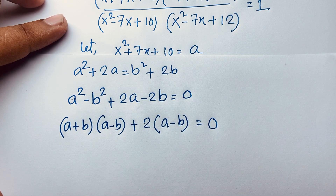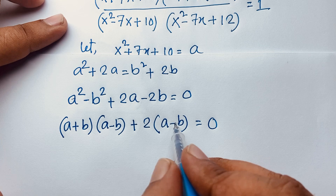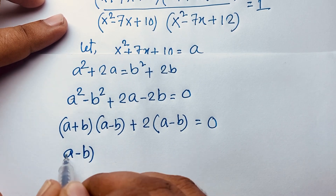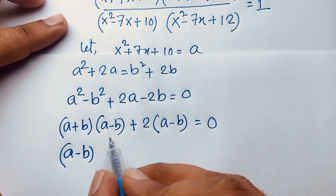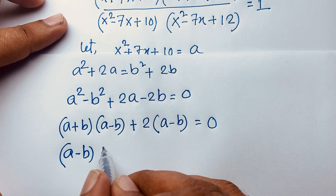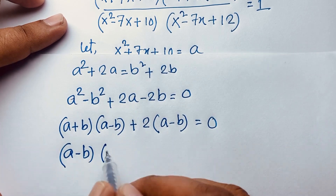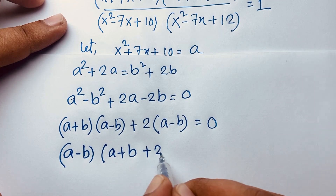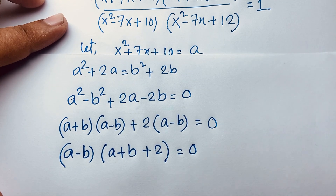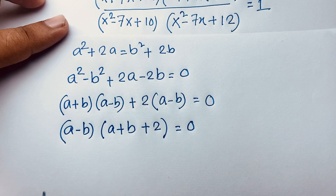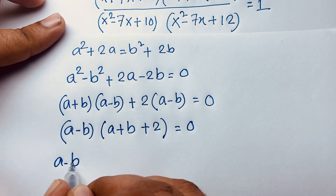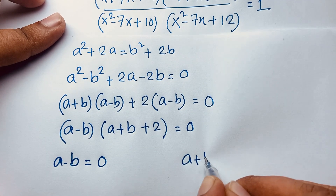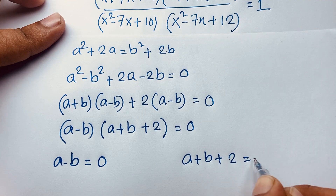We can factor out (a-b) as common: (a-b) times (a+b+2) = 0. So we have two cases: Case 1: a - b = 0, and Case 2: a + b + 2 = 0.